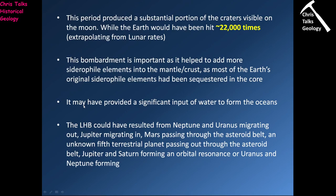Another reason the Late Heavy Bombardment is important is that modeling suggests a significant amount of water may have been added to the earth during this period. Many of these impacts would not have been rocky meteorites but comets, which are made mostly of ice — water ice, carbon dioxide ice, methane ice, ammonia ice, etc. All of this water ice being added to the earth helped increase its water budget and therefore aided in the formation of the oceans.